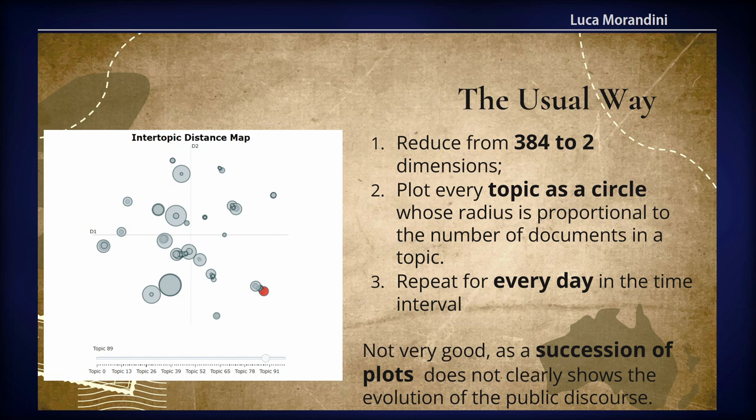In that traditional plot, every circle is a topic, and the size of the circle represents the popularity — the number of social media posts for that specific topic — and you do it for every day. The problem is that when you have dynamic topic modeling and want to see evolution through time, it becomes more complicated because you need so many plots to look at.